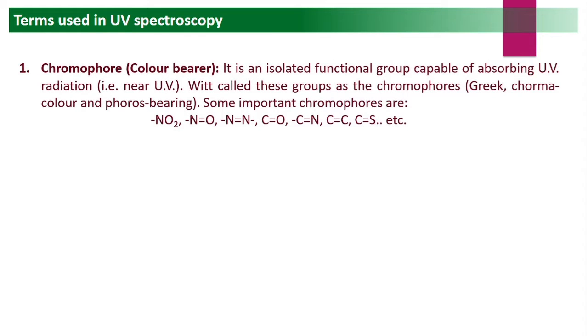The first important term is chromophore, meaning 'color bearer.' It is the isolated functional group capable of absorbing UV radiations — that is, near UV radiations. These groups are called chromophores from the Greek words 'chroma' (color) and 'phore' (bearing). Such functional groups independently absorb the radiations in UV spectroscopy and give color.